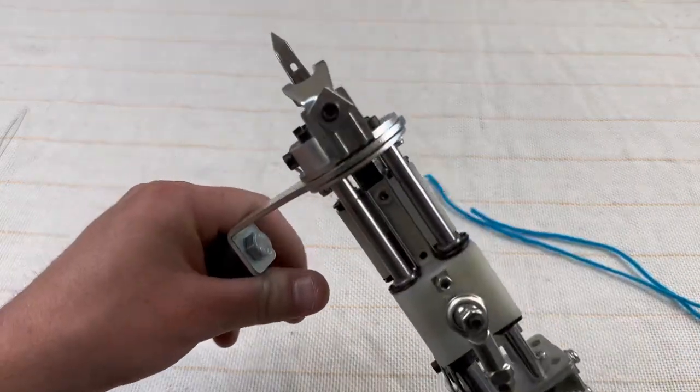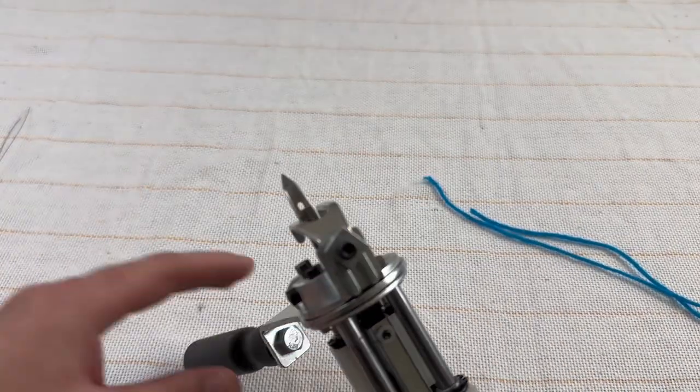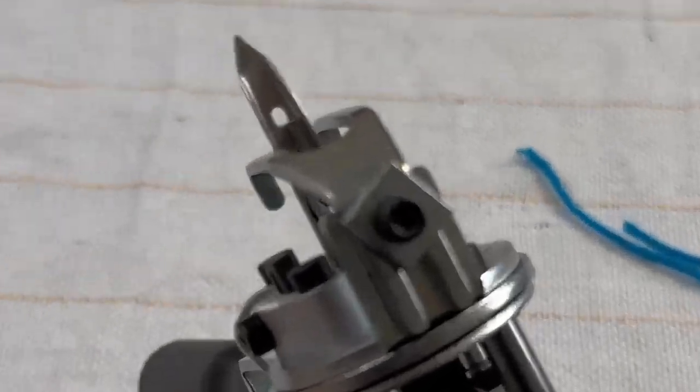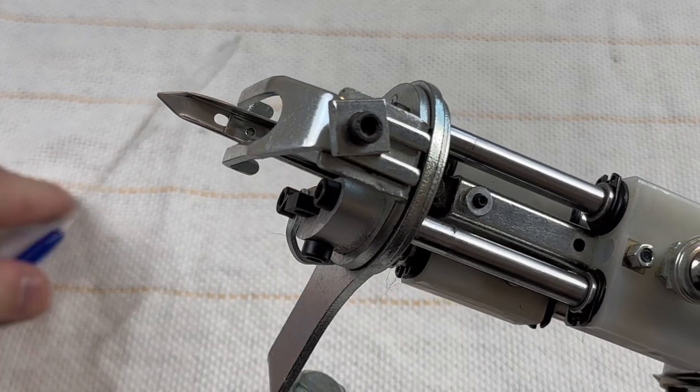What you're going to want to do is flip your rug gun over and you'll notice on the bottom part of the needle right here, let me zoom in, there's this flat little piece right there that has a little hole in it.